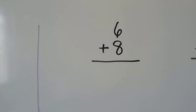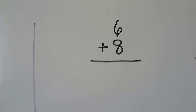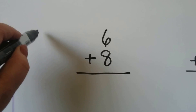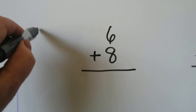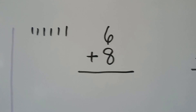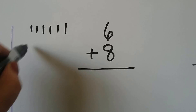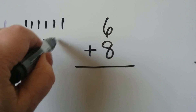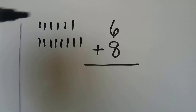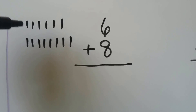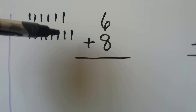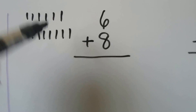6 plus 8. We could use counters. We could make 6 counters: 1, 2, 3, 4, 5, 6, and make 8 more: 1, 2, 3, 4, 5, 6, 7, 8. And then count them all: 6, 7, 8, 9, 10, 11, 12, 13, 14.